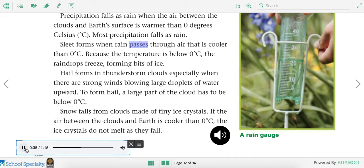Sleet forms when rain passes through air that is cooler than zero degrees Celsius. Because the temperature is below zero degrees Celsius, the raindrops freeze, forming bits of ice. Hail forms in thunderstorm clouds, especially when there are strong winds blowing large droplets of water upward. To form hail, a large part of the cloud has to be below zero degrees Celsius. Snow falls from clouds made of tiny ice crystals. If the air between the clouds and earth is cooler than zero degrees Celsius, the ice crystals do not melt as they fall. So most of the precipitation we see is rain. As it gets colder, you might see forms of sleet, hail, and snow.